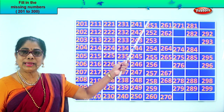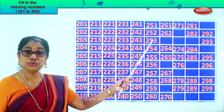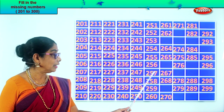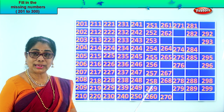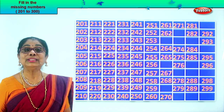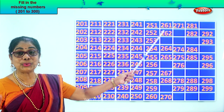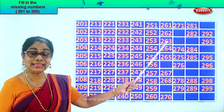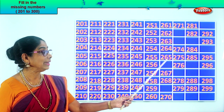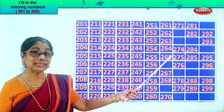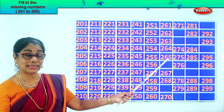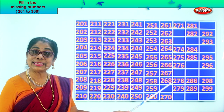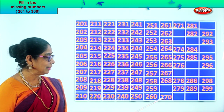Very good. Read: 251, 252, 253, 254, 255, 256, 257, 258, 259, 260. After 60, after that 261. 262. After 2, 3. After 62, 63. So you write 263. 264, 265, 266, 267, 268. After 8, 9. After 68, 69. 269, 270.